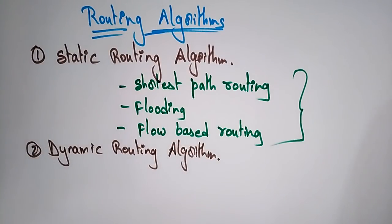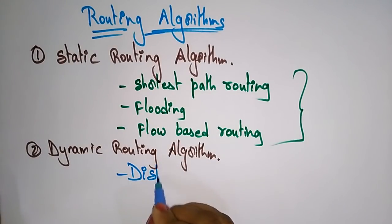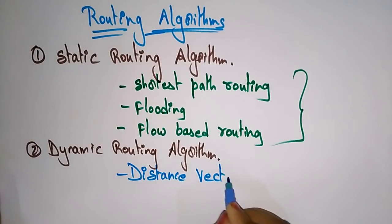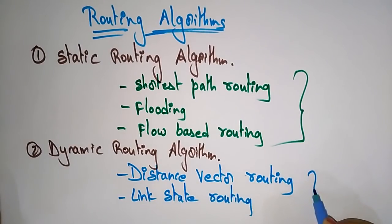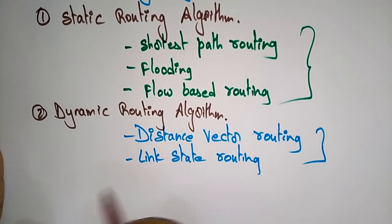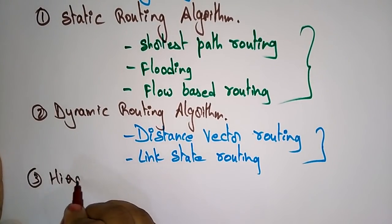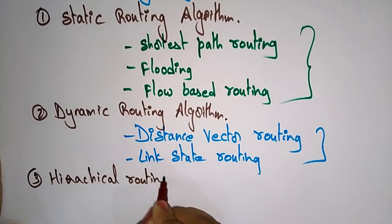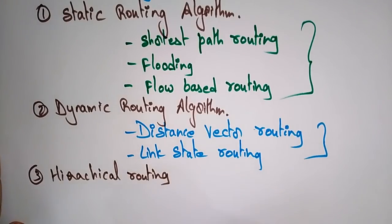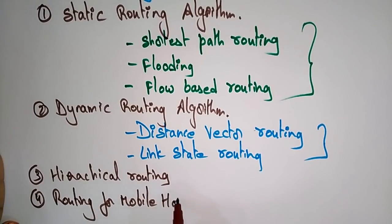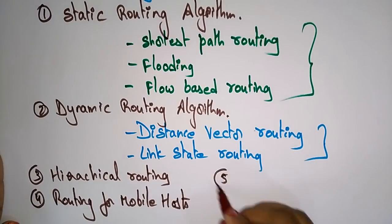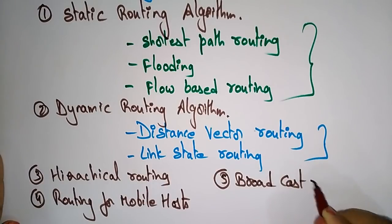The dynamic routing algorithms are: distance vector routing and link state routing. These two come under the dynamic routing algorithms. There is also hierarchical routing, routing for mobile hosts, and broadcast routing.